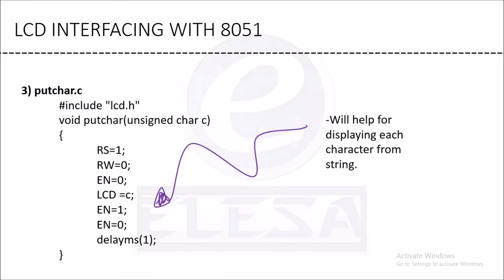The next function is the putchar function. The putchar function is used to display a single character — just like printf displays a full string, the putchar function is used for printing a single character.